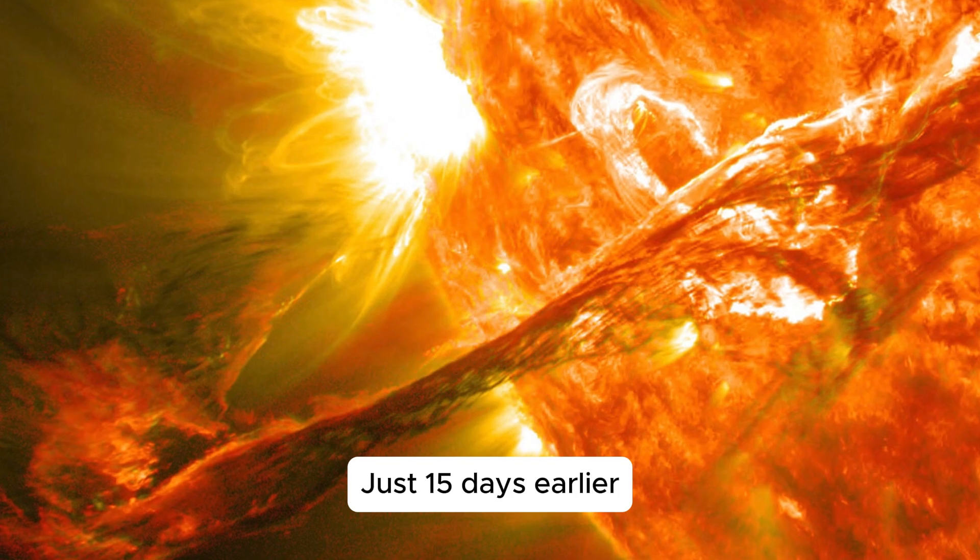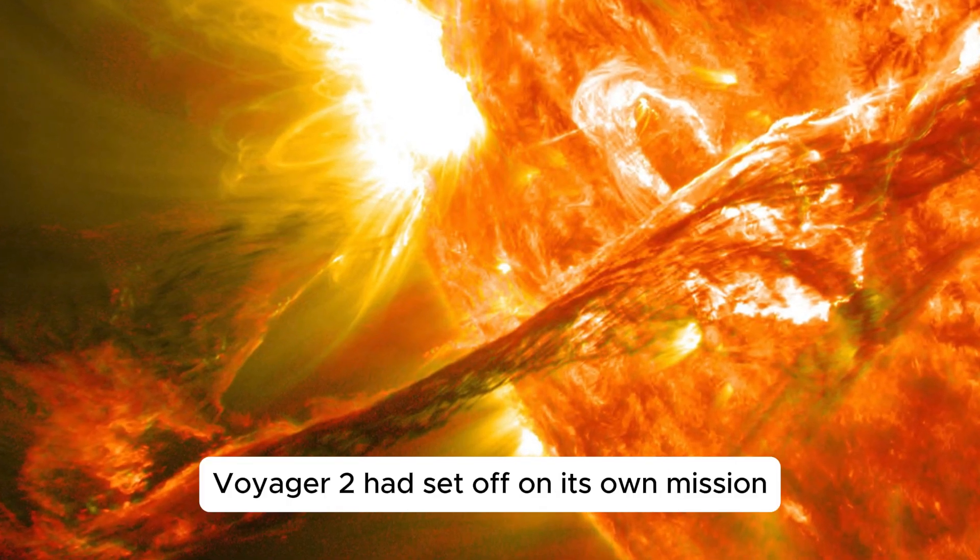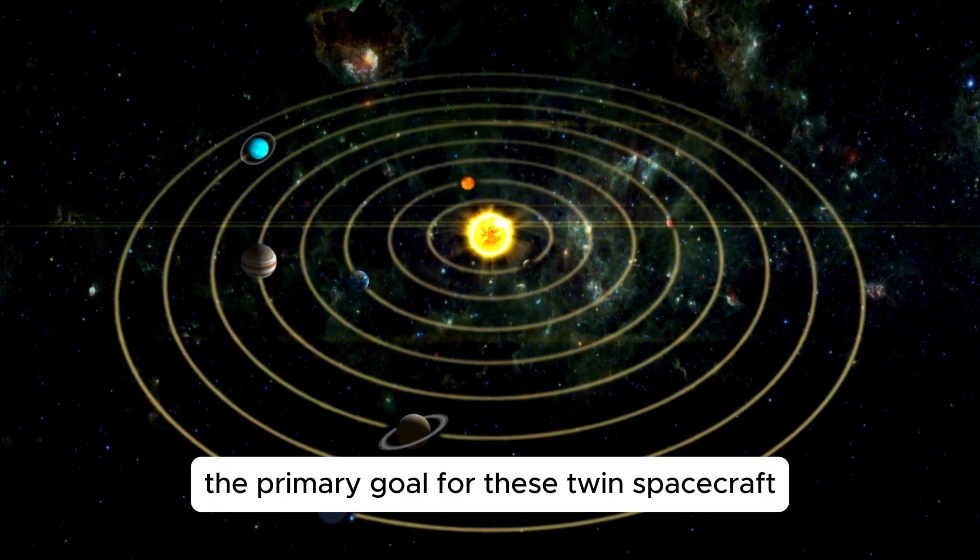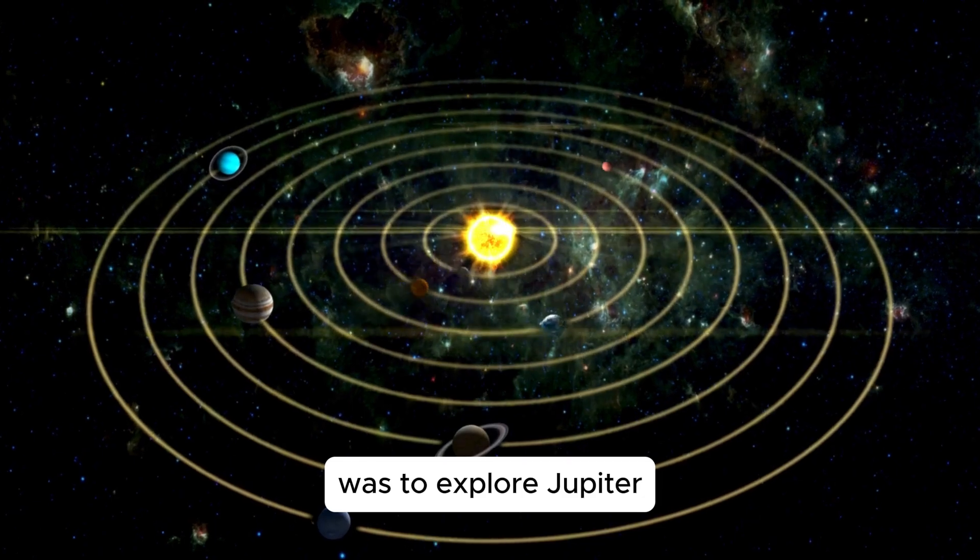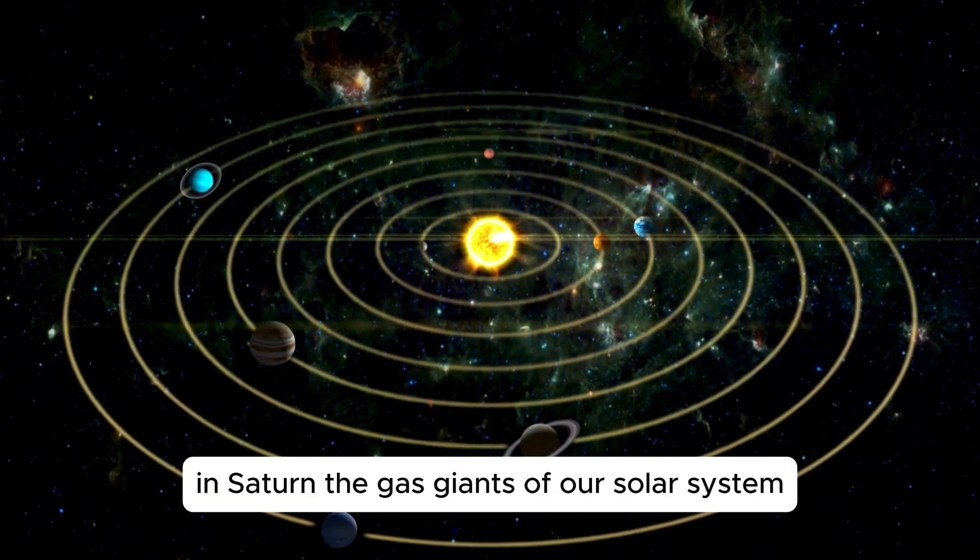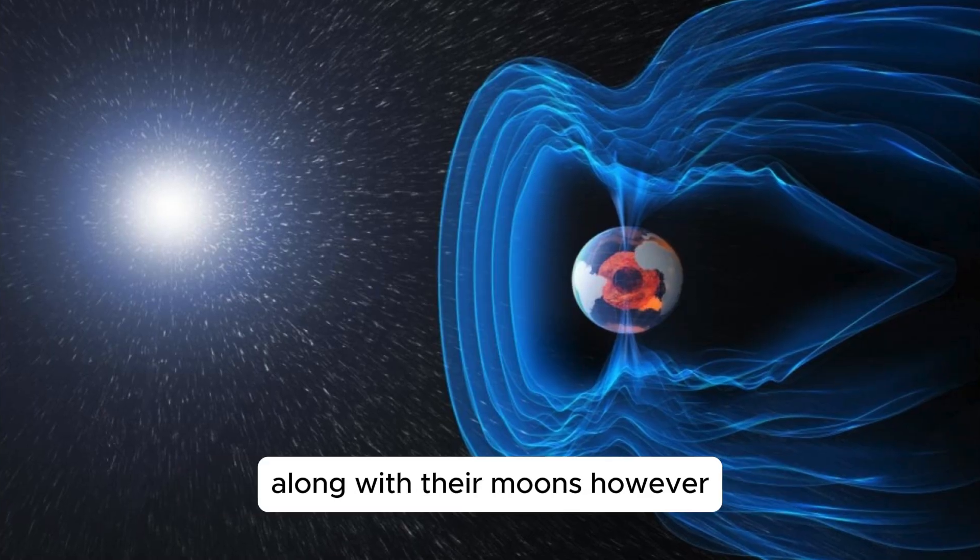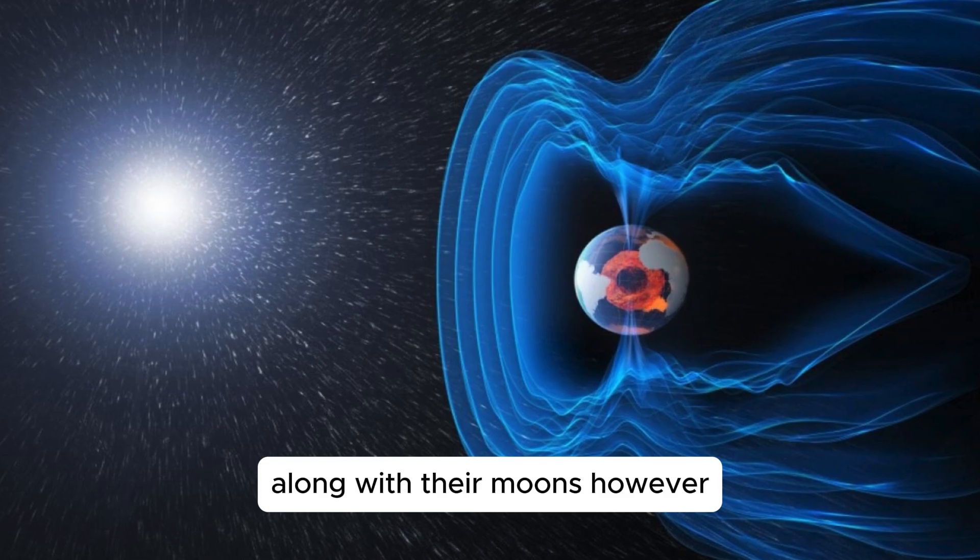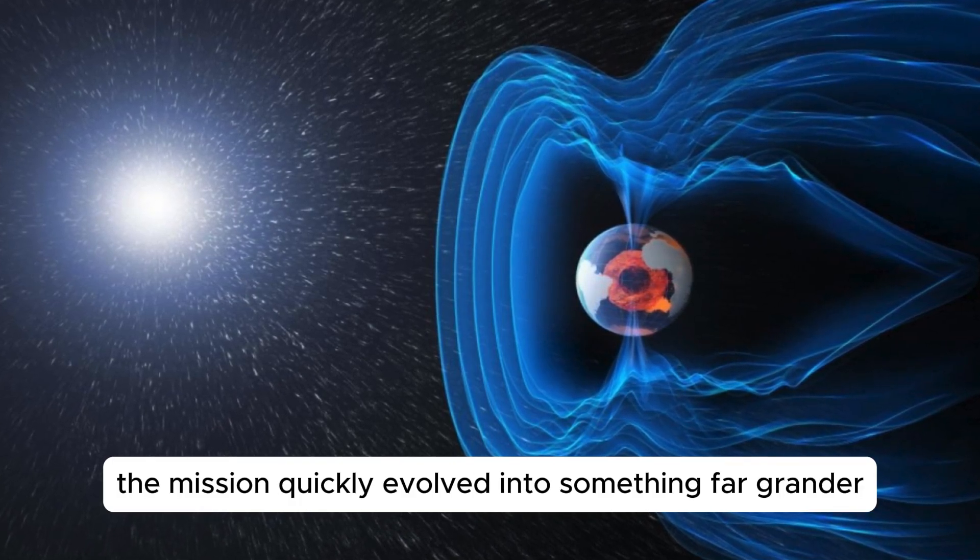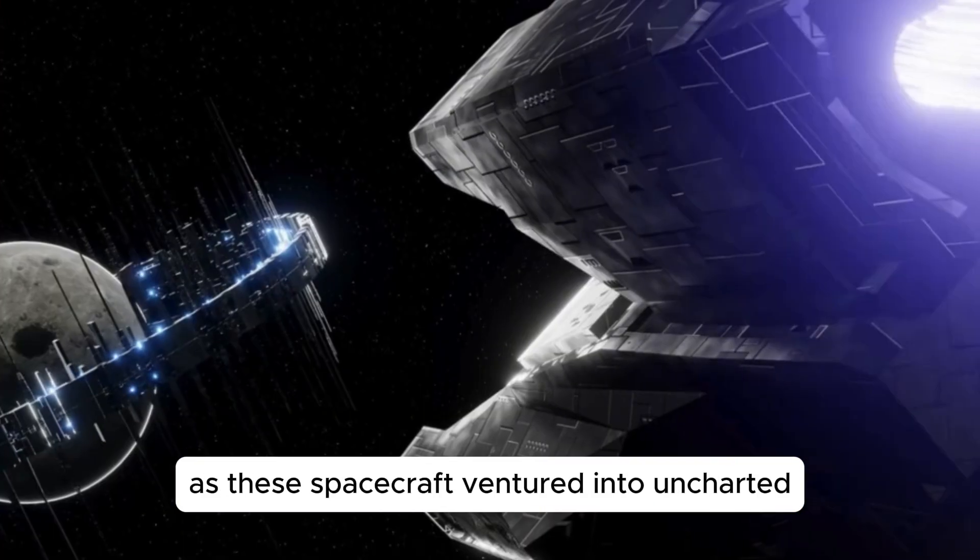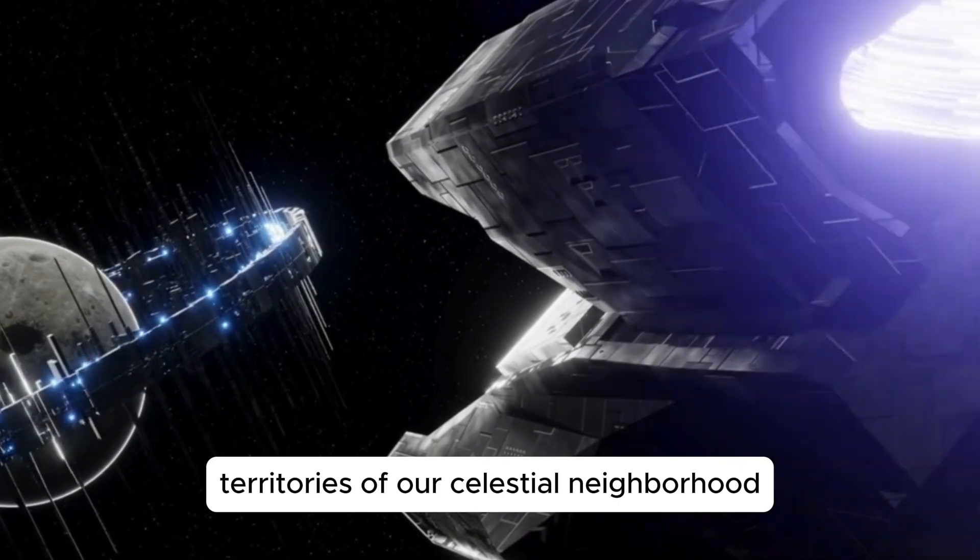Just 15 days earlier, Voyager 2 had set off on its own mission. The primary goal for these twin spacecraft was to explore Jupiter and Saturn, the gas giants of our solar system, along with their moons. However, the mission quickly evolved into something far grander, as these spacecraft ventured into uncharted territories of our celestial neighborhood.